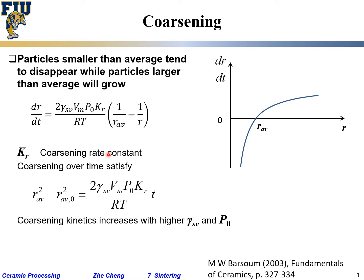Coarsening kinetics — how fast the radius increases — would increase with higher surface tension as well as higher equilibrium pressure. If your particle has larger surface energy, it has a greater tendency to shrink its surface area, so particles tend to coarsen quickly to reduce surface energy. High vapor pressure p_0 means a greater tendency to go through the vapor phase; the transport is faster, resulting in a higher coarsening rate.